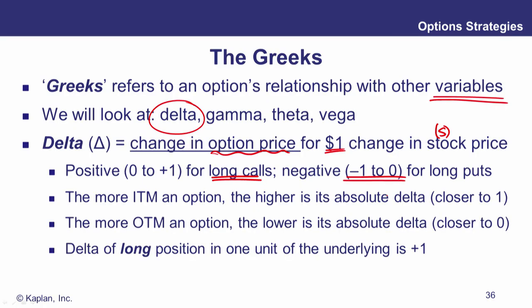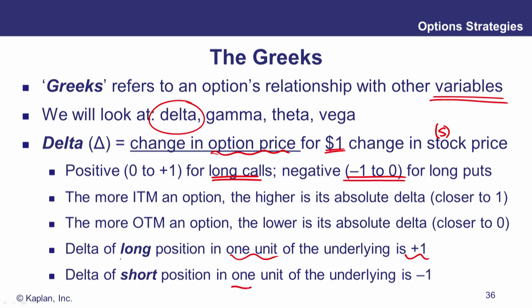The delta of a long position in one unit of the underlying is plus one — the sensitivity of the underlying to itself is just one — and a short position has delta minus one. We might be combining positions in the underlying with options, such as protective puts and covered calls, and looking at a net or overall position delta.